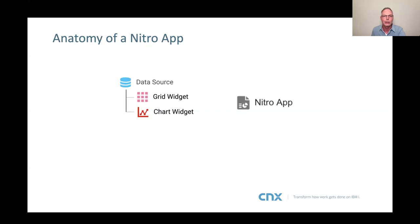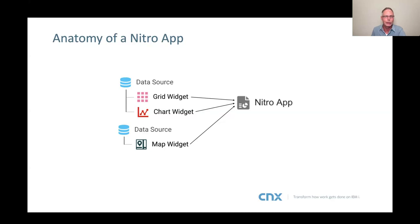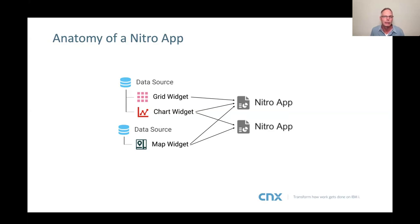Once you have some widgets defined, one or more of those go into creating a Nitro app. You can have an unlimited number of data sources, with different widgets attached to different data sources, all going into the same Nitro app. Individual graphical elements can also participate in more than one Nitro app — for example, a map widget tracking truck locations around the city can appear in multiple different applications, and you only have to maintain that widget one time.